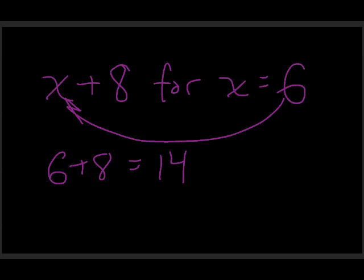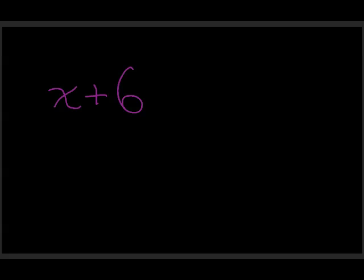For something to be an equation it needs to have not only a variable expression — something like x plus 6 — but also an equals sign and then something on the other side of the equals. Today, rather than being given the value of the variable and plugging it in, our goal is to find what the variable stands for, because all a variable does is hold the place of a number. That's all it does.